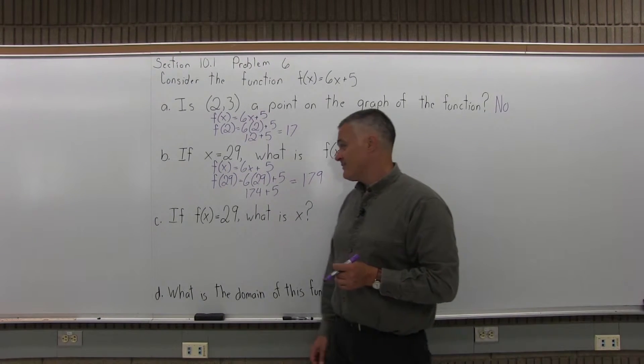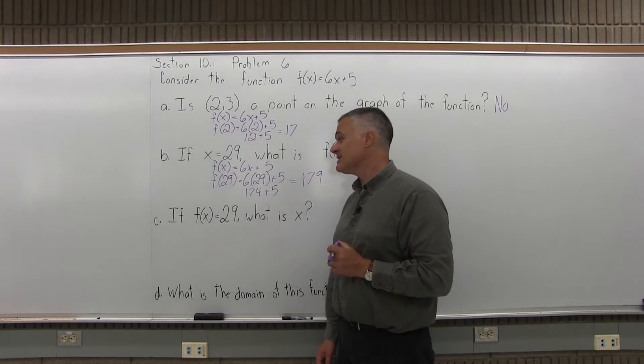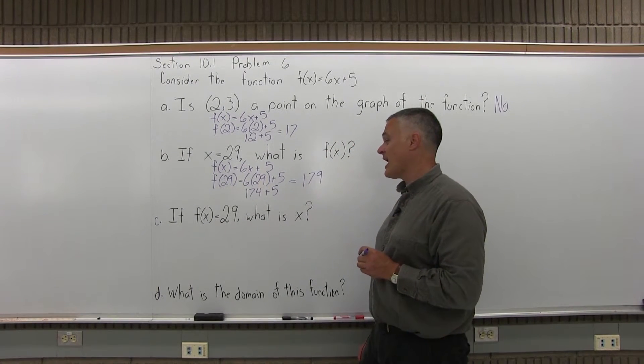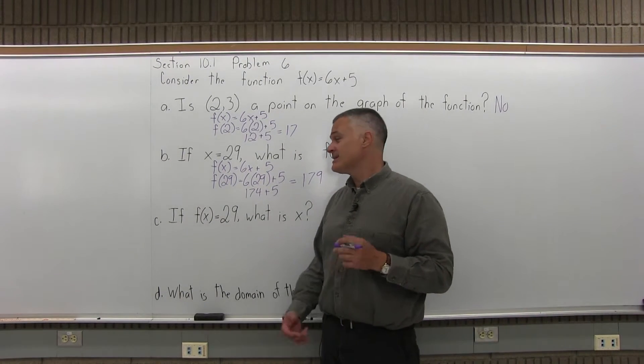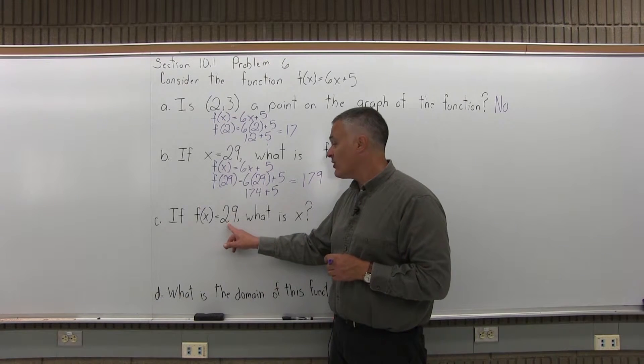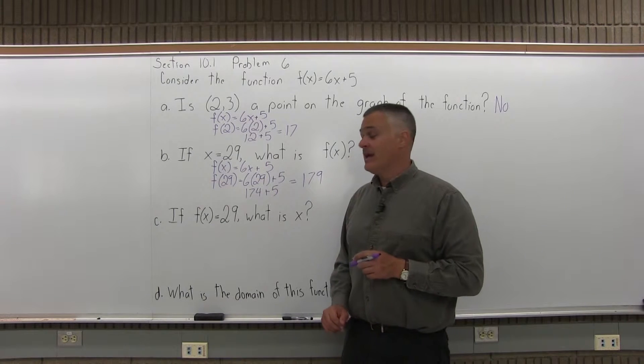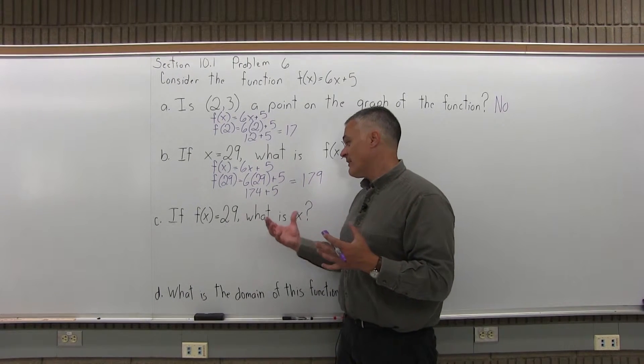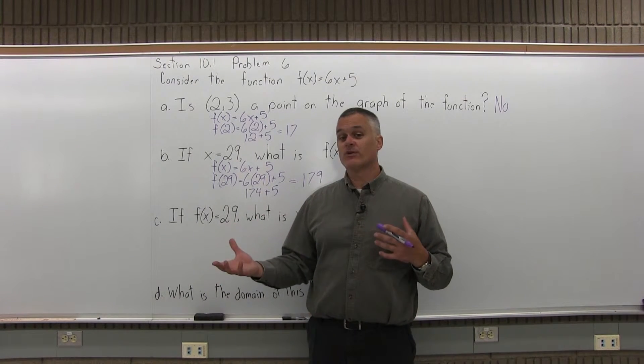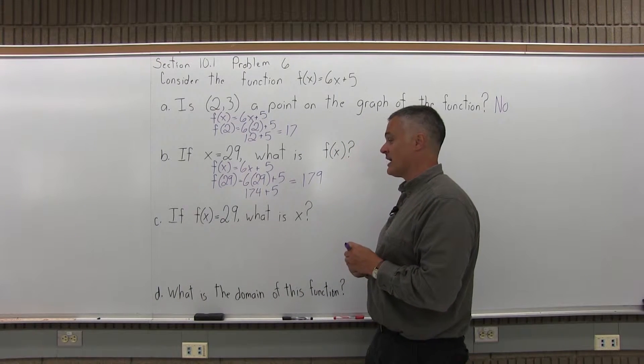Part C seems the same, but it's different. It says if f of x is 29, what is x? They're basically asking if you got out a 29, what did you put in? And again, you can't see the graph, so f of x equals 29, you have a y-coordinate of 29. What's the x that goes with that y-coordinate of 29?